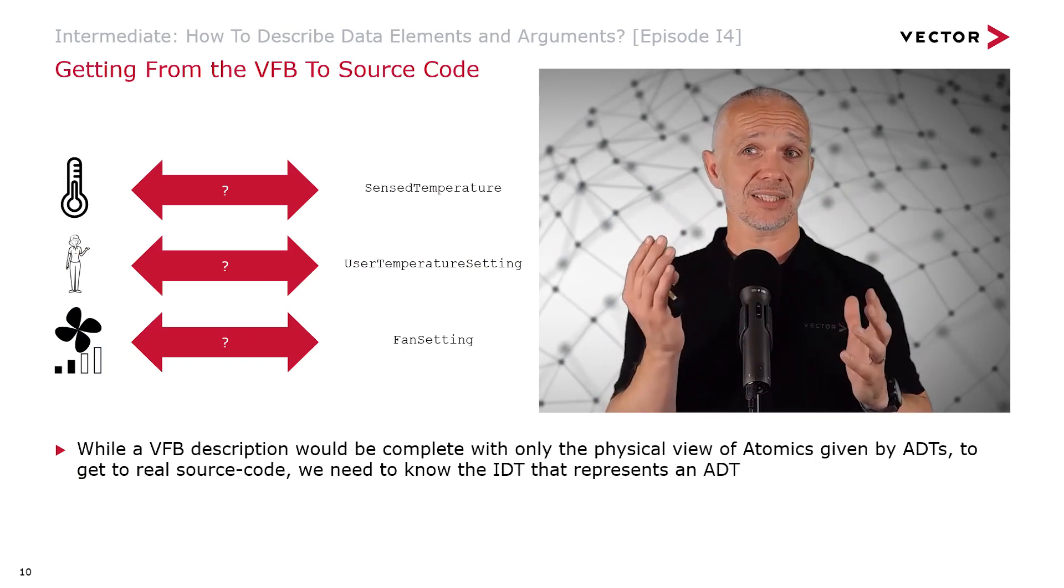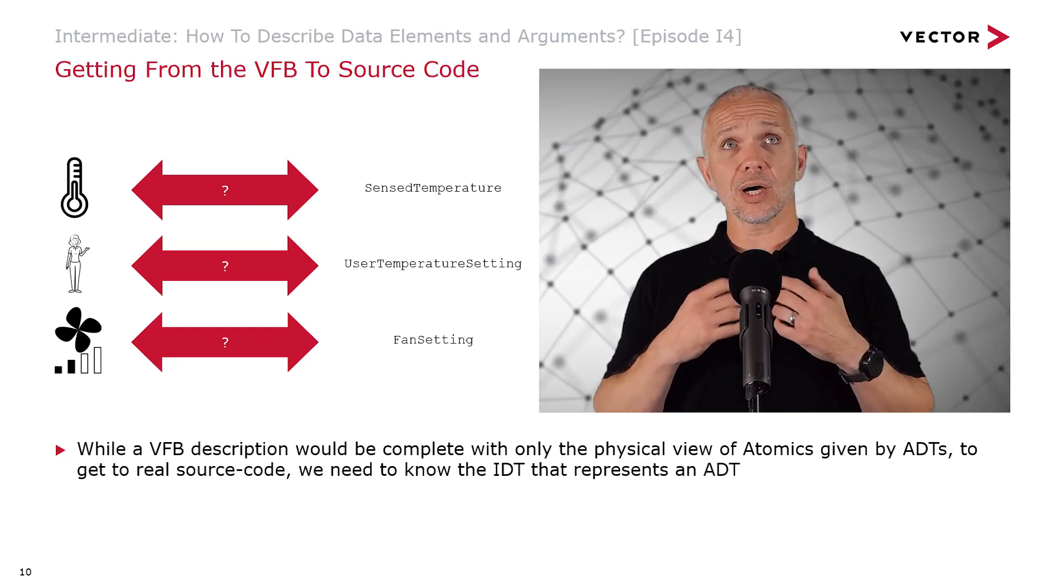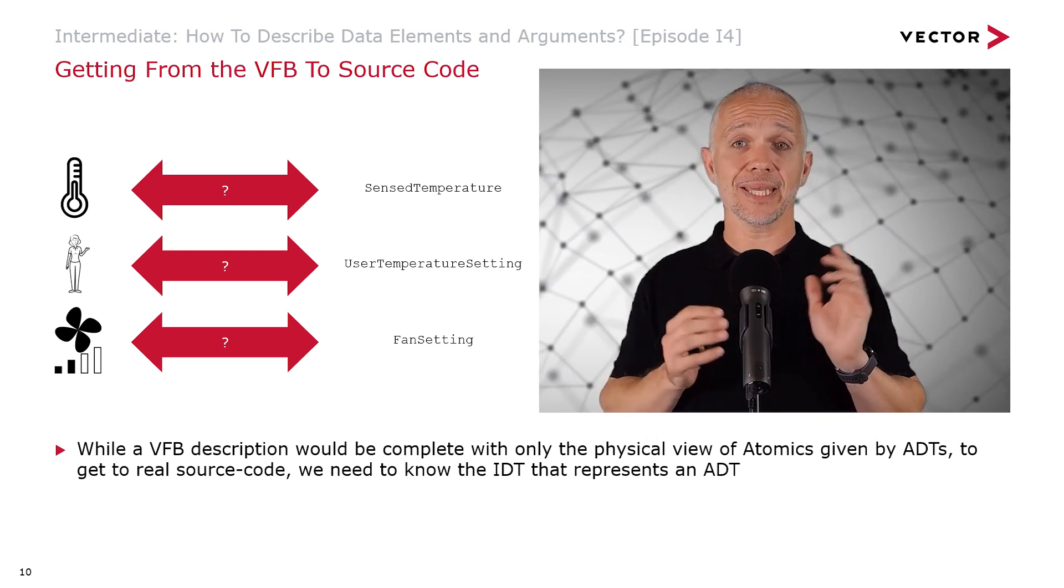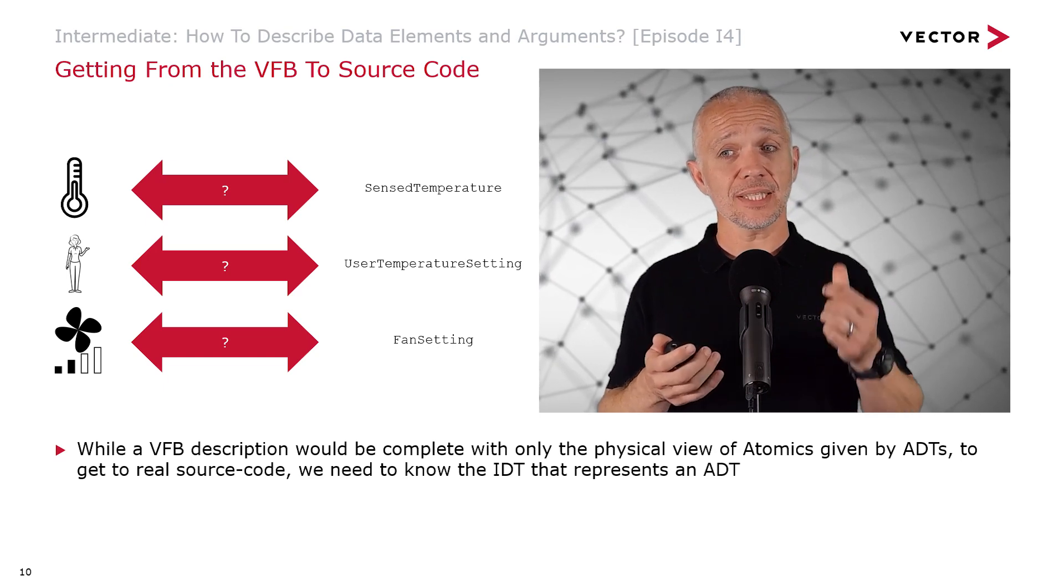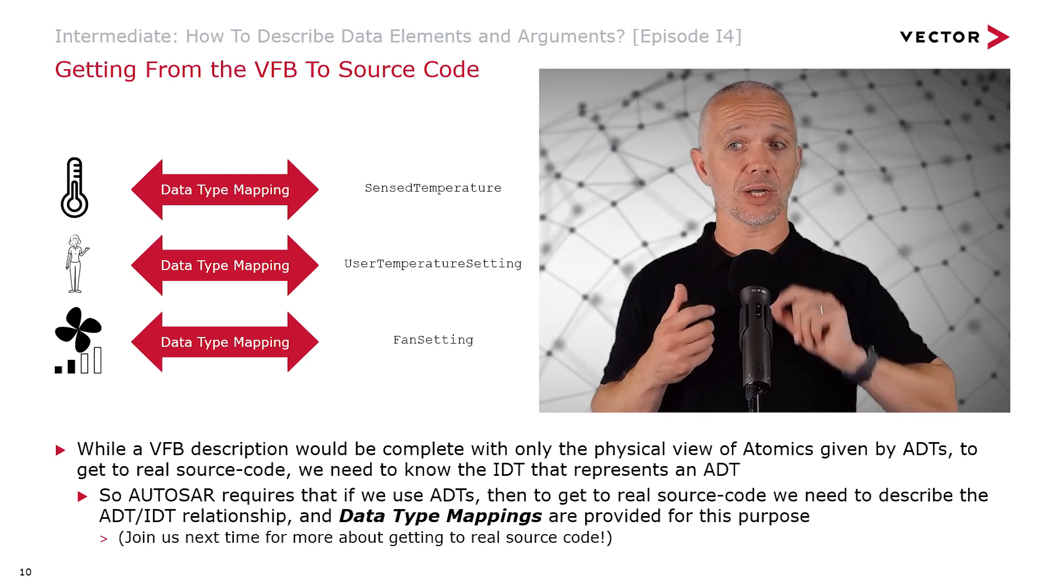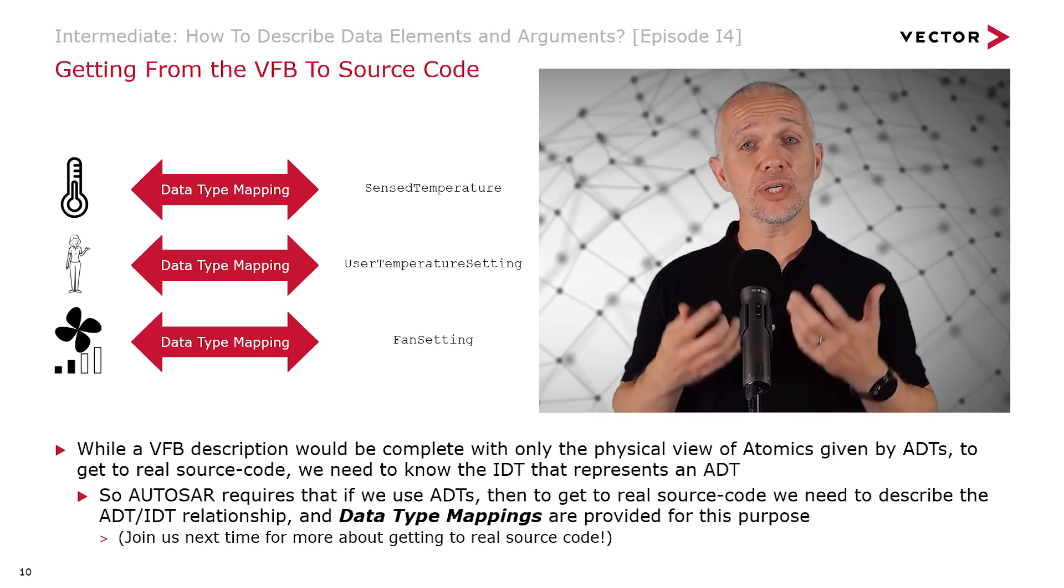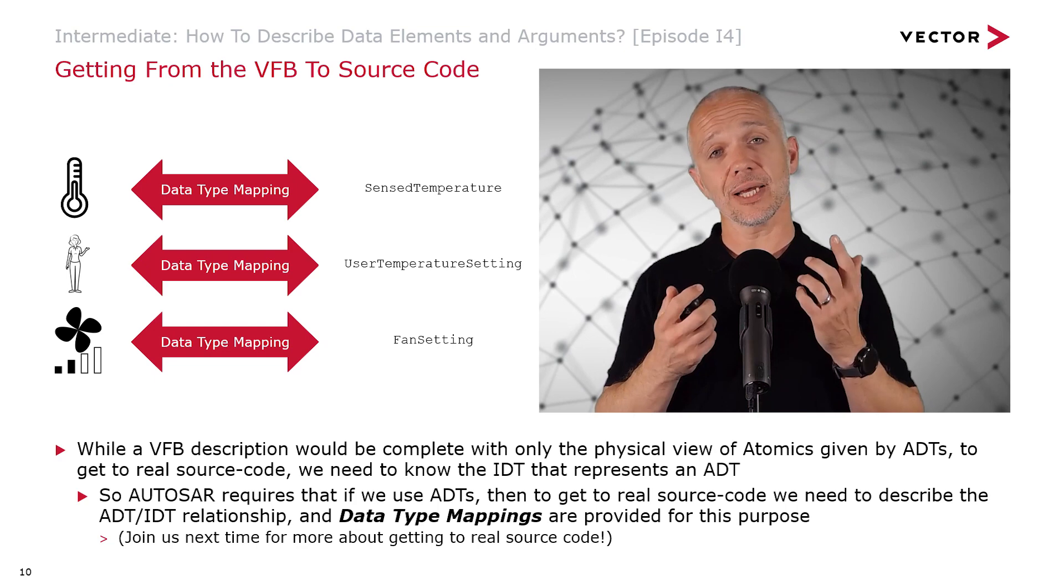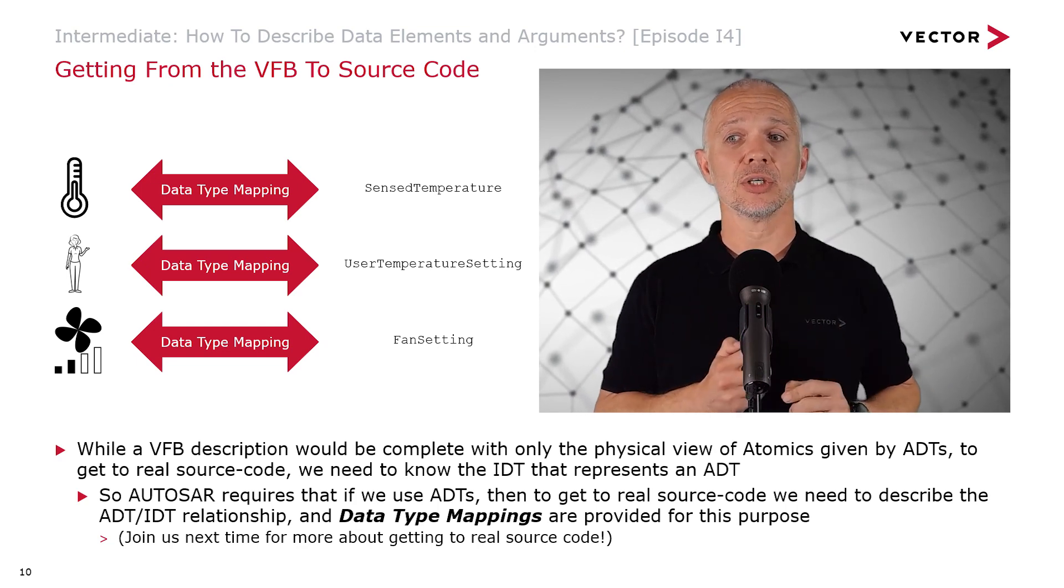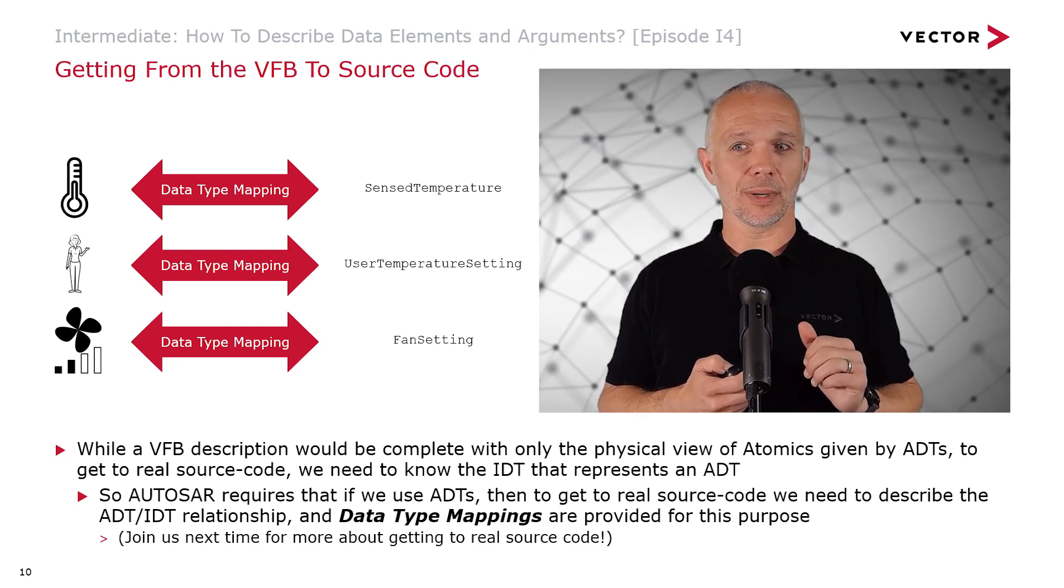Now, to get from the virtual function bus to source code is something else we need to think about. Because while a virtual function bus description would be complete with only the physical view of Atomics that we get from ADTs, to get to real source code we need to know the IDT that represents an ADT. AUTOSAR therefore requires that if we use ADTs in our virtual function bus level description, then to get to real source code we need to describe the relationship between ADTs and the corresponding IDT. We use data type mappings to do this. And we will, in the future, talk a bit more about getting to real source code.